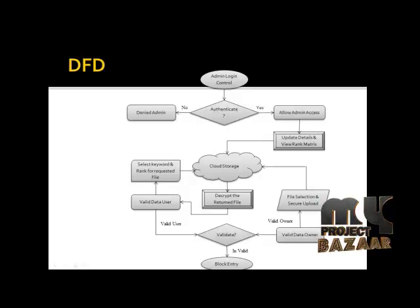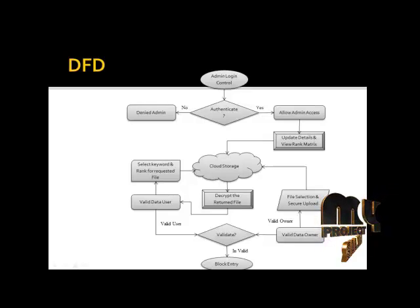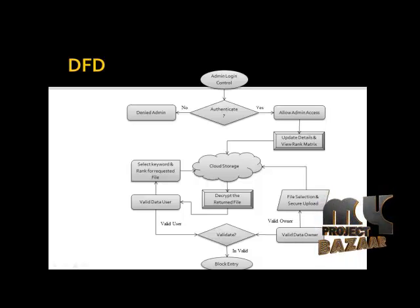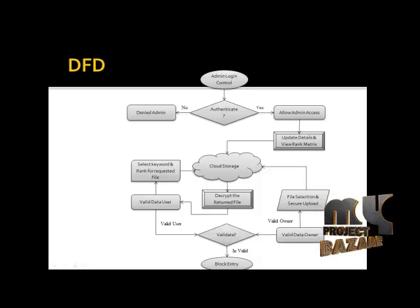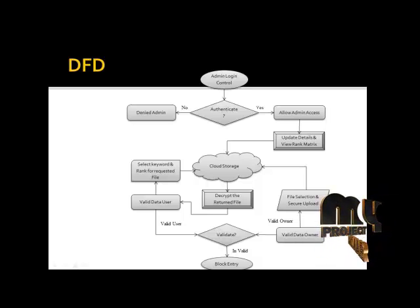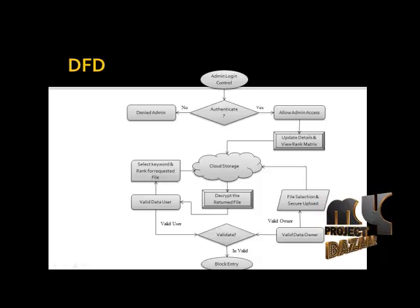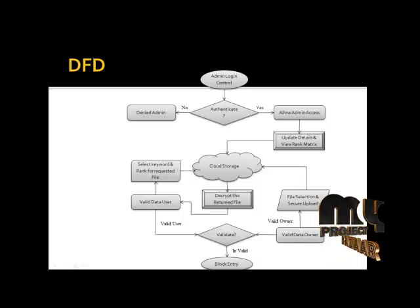This is the data flow diagram of this project, starting from the admin login control. The admin can log into the cloud storage by authentication, so only a valid admin can gain access; otherwise they are denied entry. After the admin gets access, they can update all the details of both the data user and data owner, and can also view the rank matrix created by the accessing of each file.